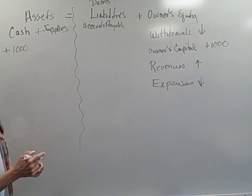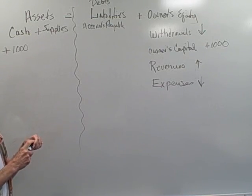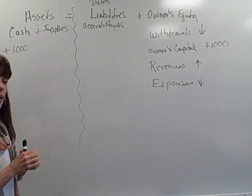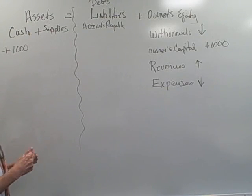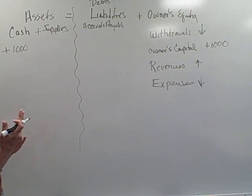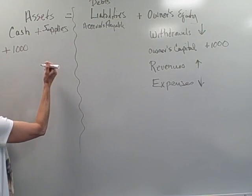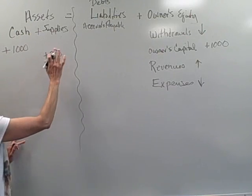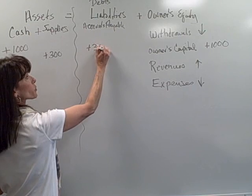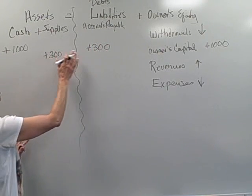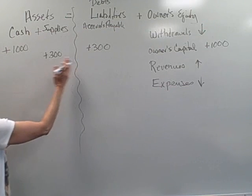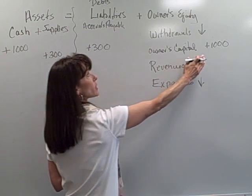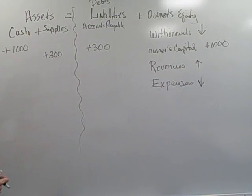Let's try another transaction. The business decides to purchase supplies on account — meaning it charged them and doesn't want to pay right now. Supplies go up three hundred dollars, and since they charged it, they owe three hundred dollars. So assets went up three hundred and liabilities went up three hundred. Our equation remains in balance because the total of both sides is thirteen hundred dollars.